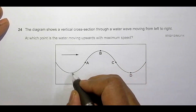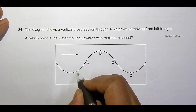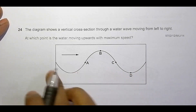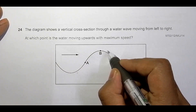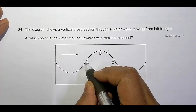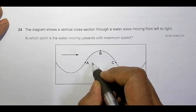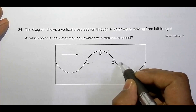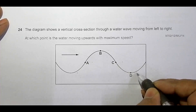So after an instant, what happens is this wave will be shifted — the crest will be shifted here, and the midpoints will be shifted accordingly — because the wave is going in this direction.